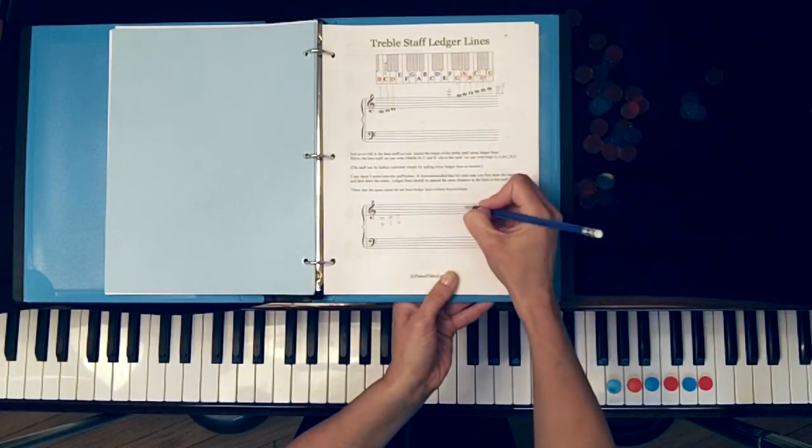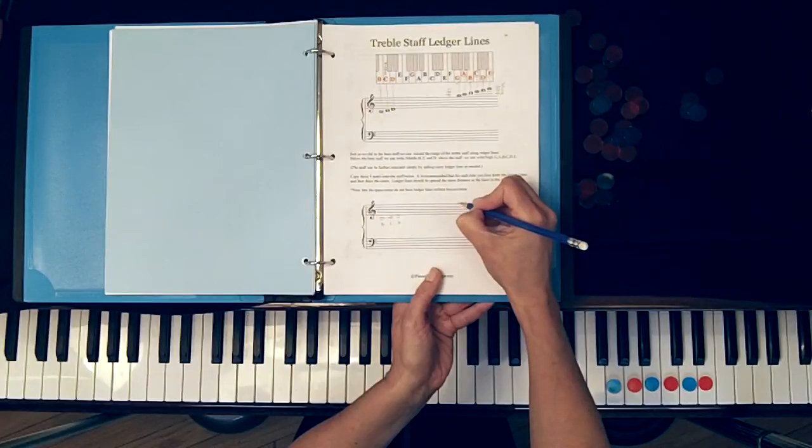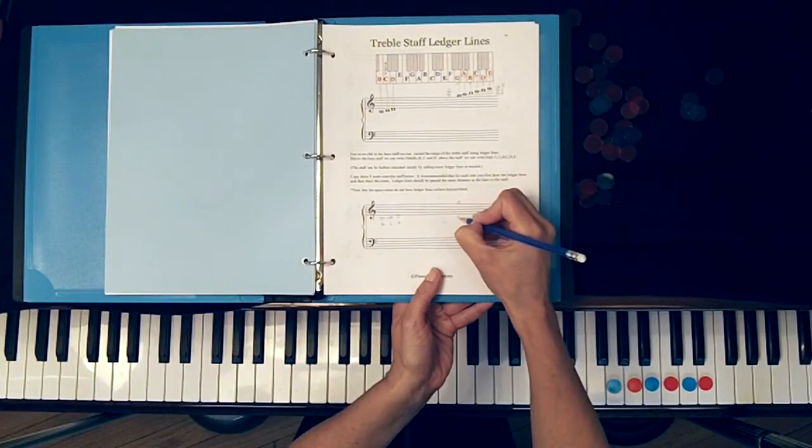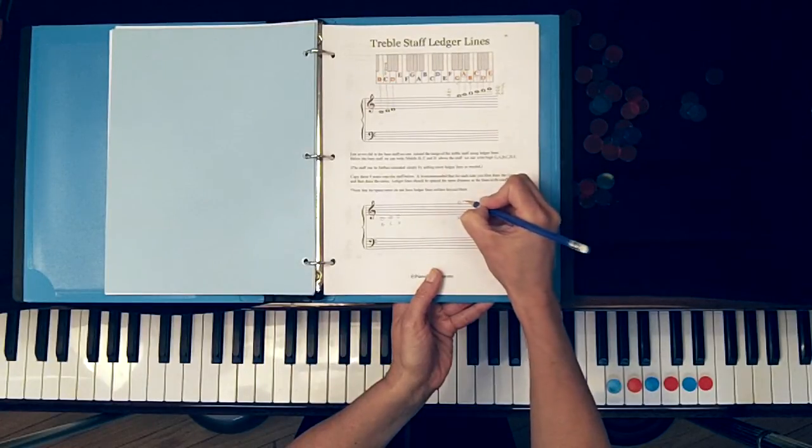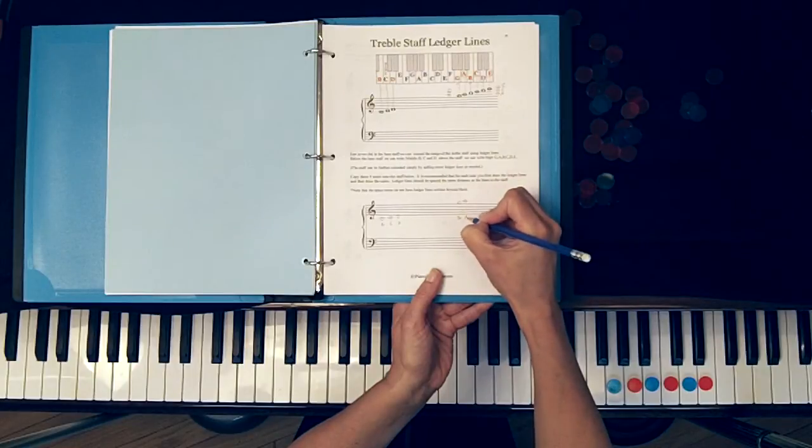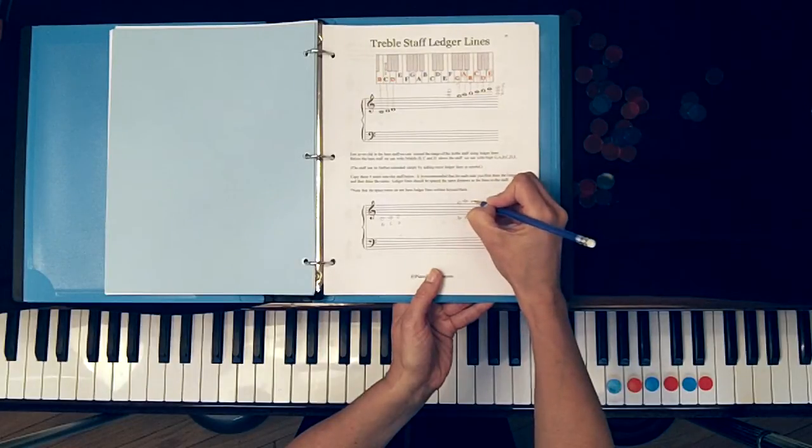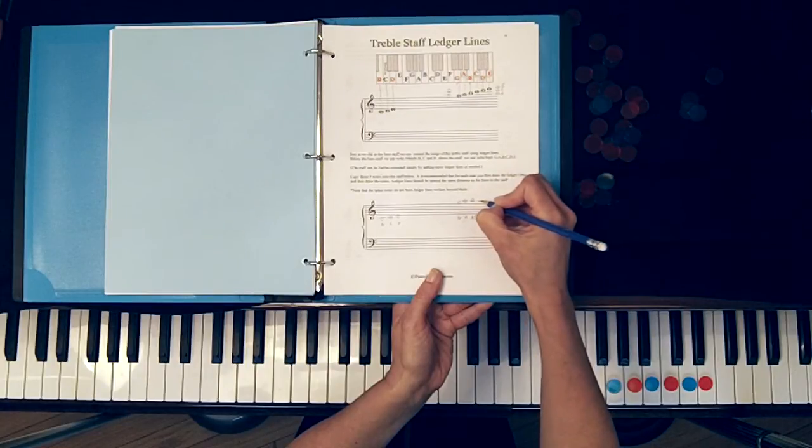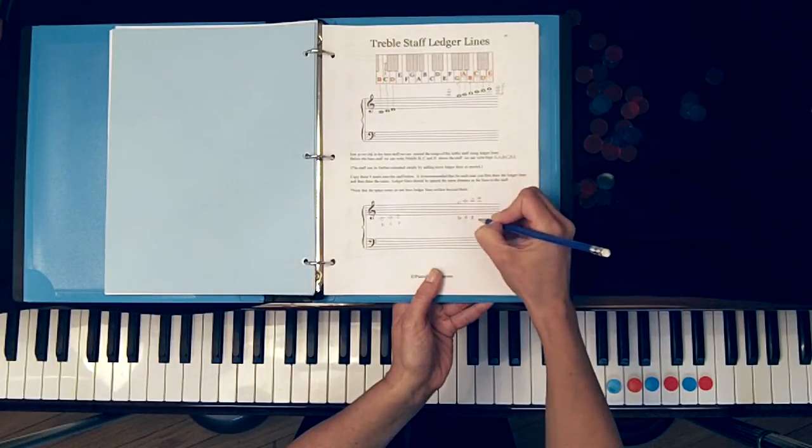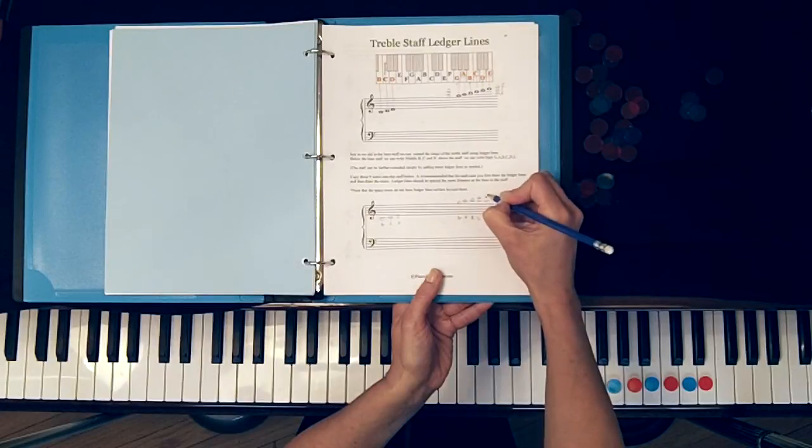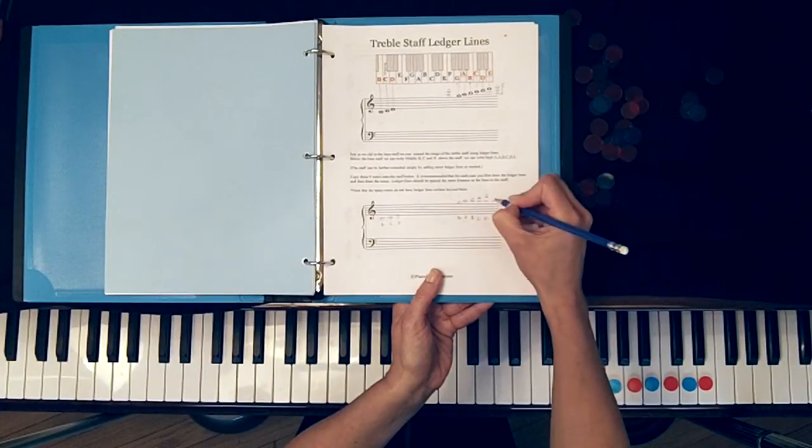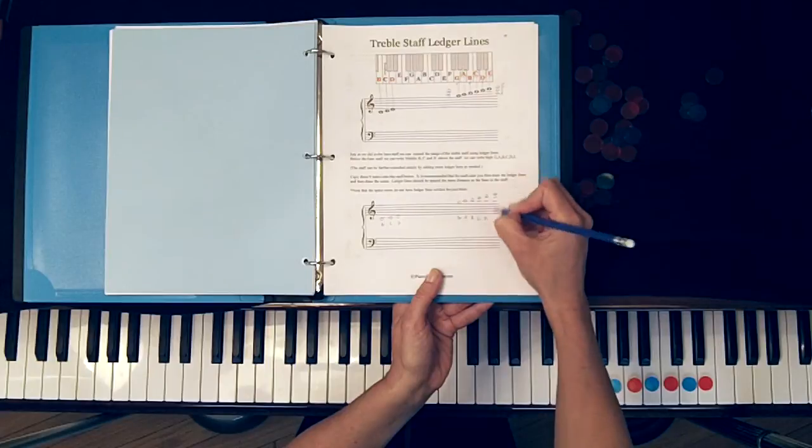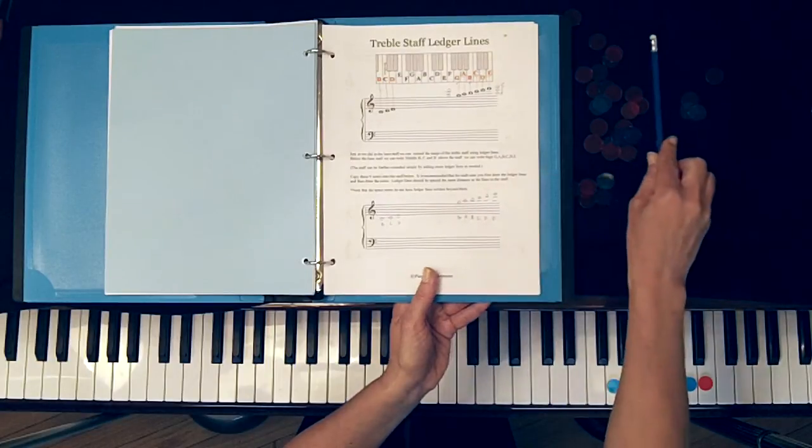As always be careful not to draw your space notes over any lines and also be careful not to make your line notes too big that they cross over more than one line. Your ledger lines should be the same distance apart from each other as the staff lines.